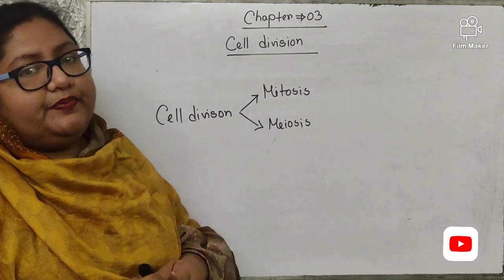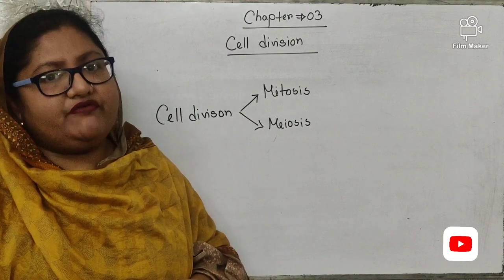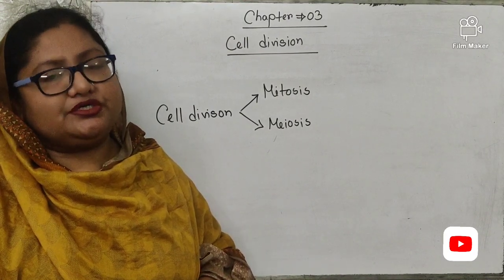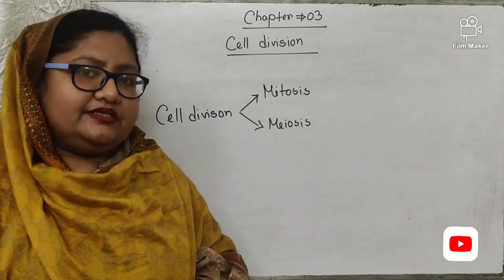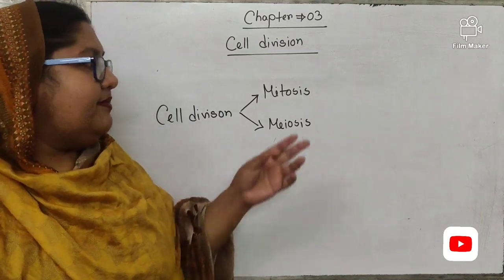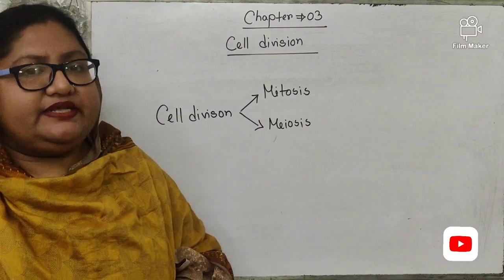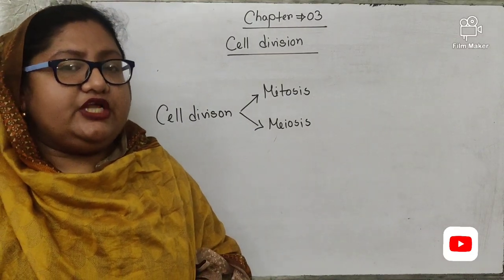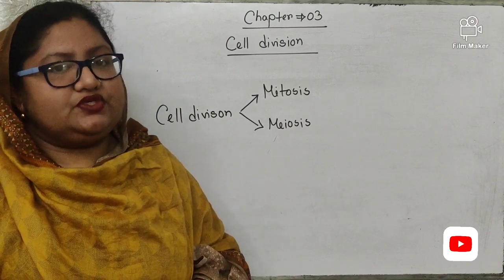Mitosis: the process of cell division in which the nucleus and the chromosomes of a cell divide only once to produce two daughter cells, where the number of chromosomes and other characteristics remain the same as the mother cell, is known as mitosis cell division. Mitosis takes place in higher animals and plants, and also in lower organisms during asexual cell division.